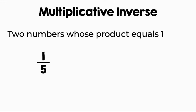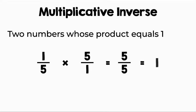Is one-fifth and five over one multiplicative inverses? Well, let's multiply them and see. Let's multiply one times five and five times one. That will give us five over five, which simplified equals one. So yes, they are multiplicative inverses.